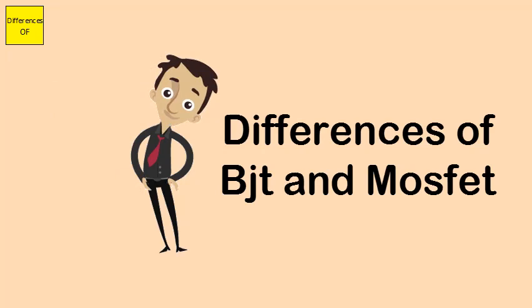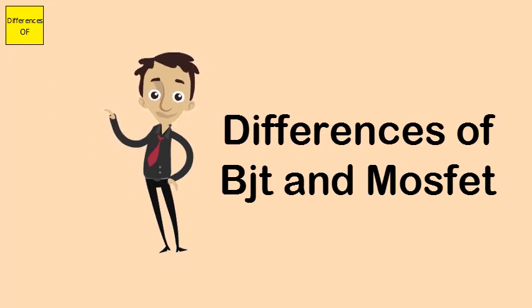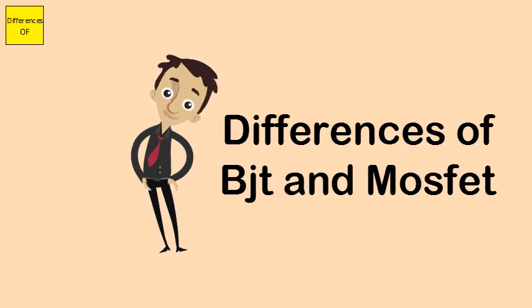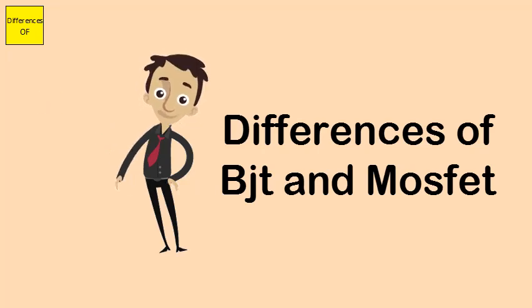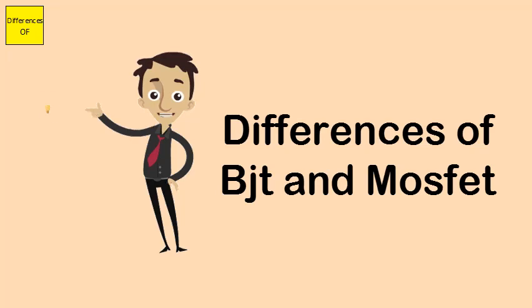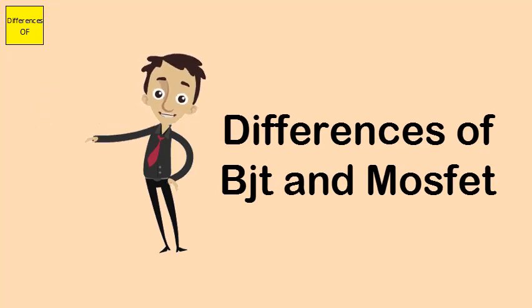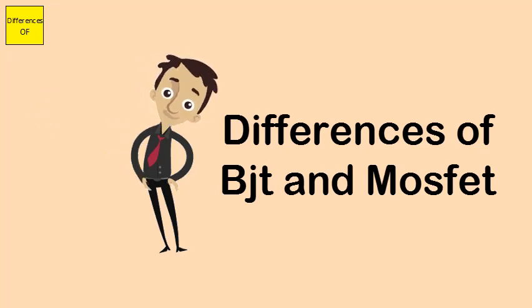BJT is a semiconductor device that replaced the vacuum tubes of the old days. MOSFET is a voltage-controlled device. In BJT there is a base current, while in MOSFET there is no base current.